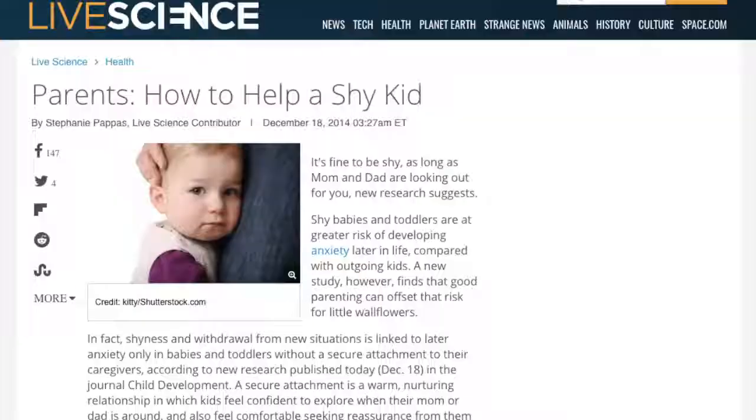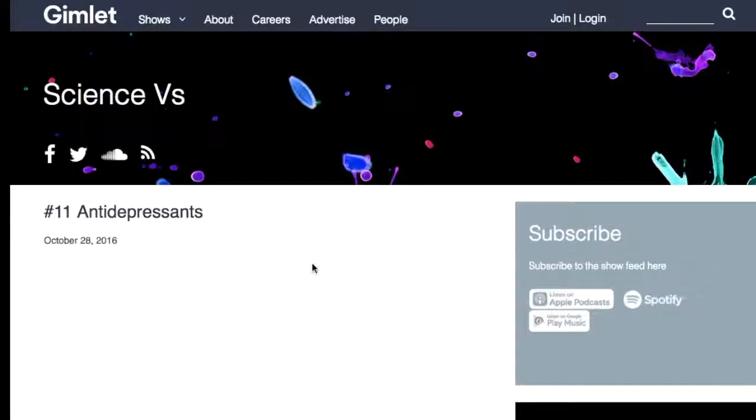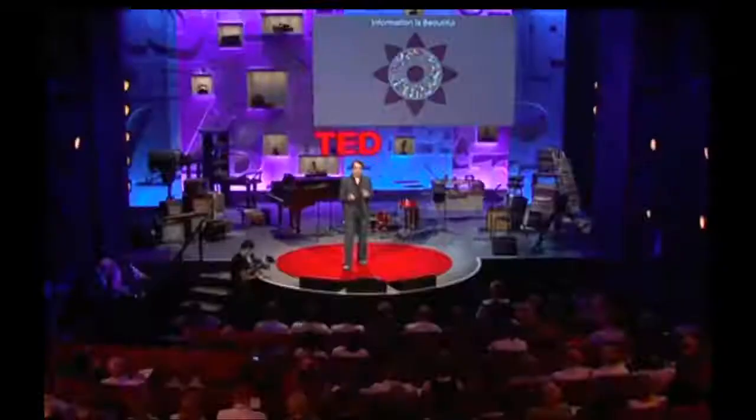Psych 216 is designed to help students think critically about research claims presented in the media. Throughout the course, students learn about psychology's research methods by exploring media reports of psychological research, including podcasts, news articles, and other multimedia.